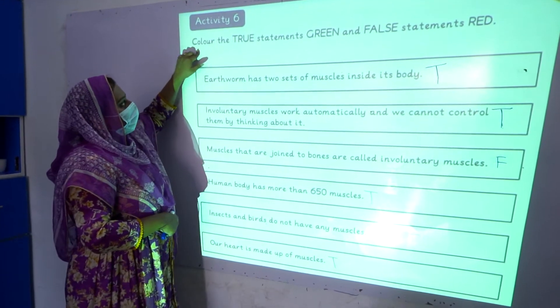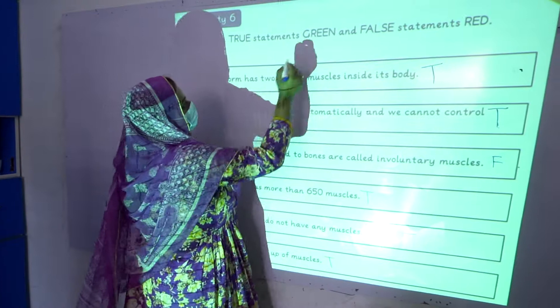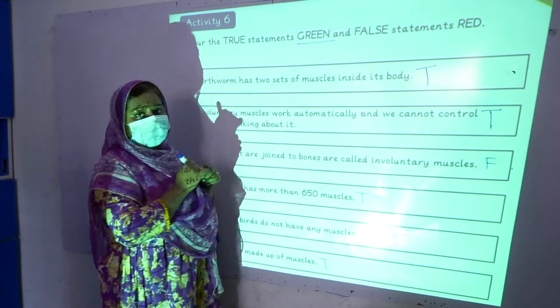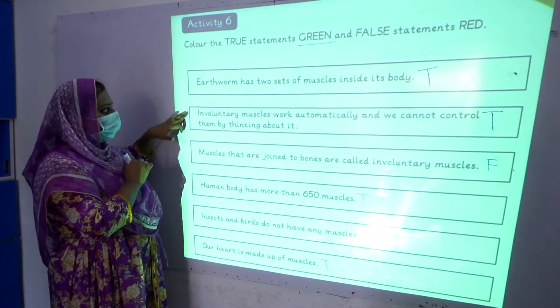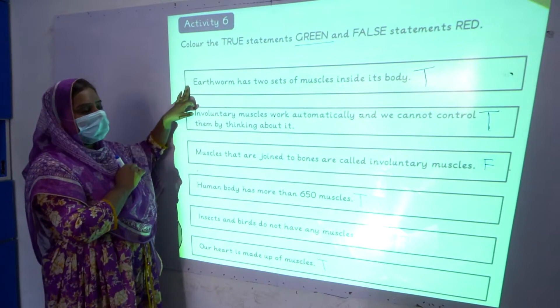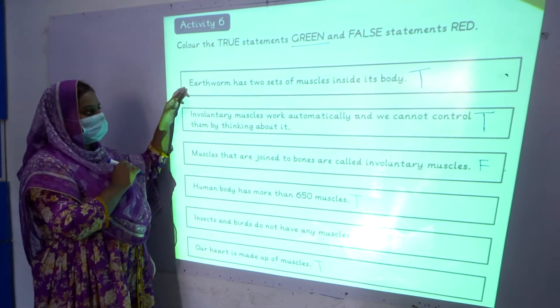This is our activity number 6. Colour the true statement green and false statement red. You have to colour the statements red and green if they are true and false.